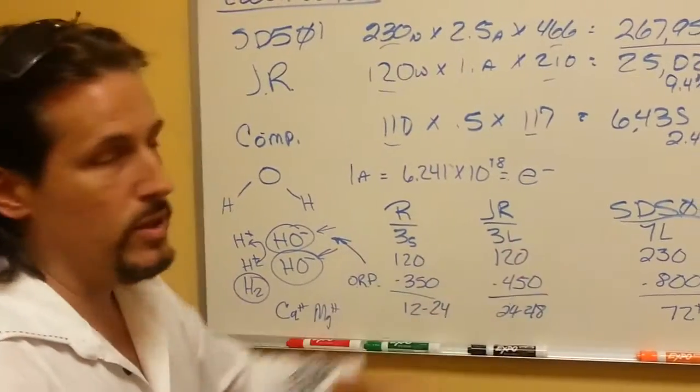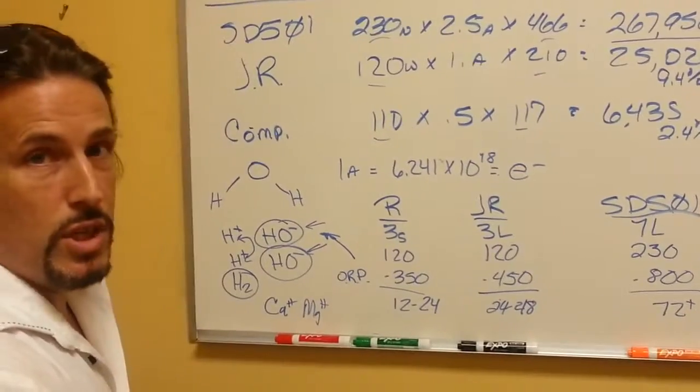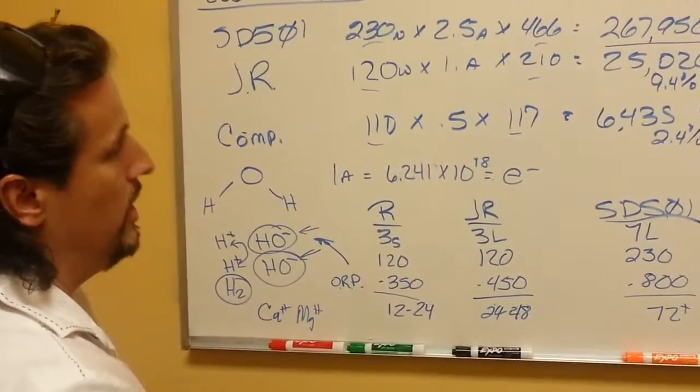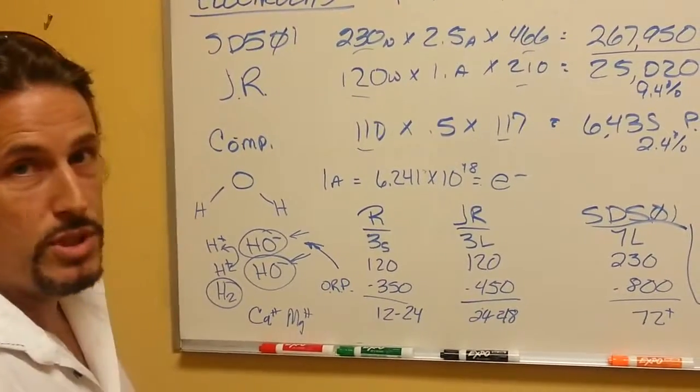You'll still end up with filtered water after these things expire, but you'll have lost the ORP, which is the charge that allows it to facilitate getting water into the cells. And that's basically the difference in the machines.